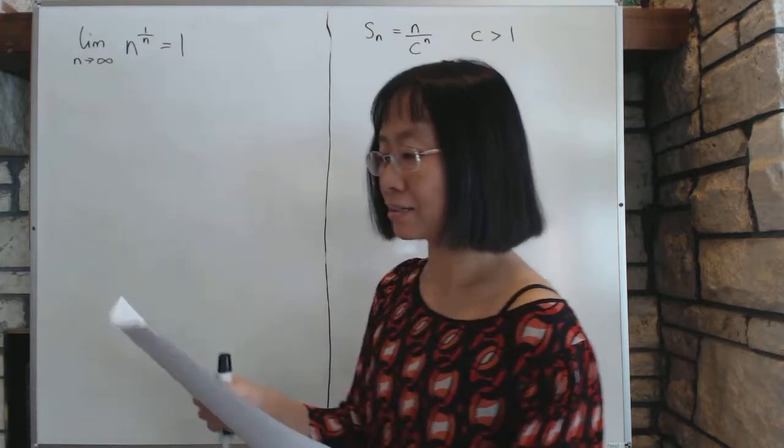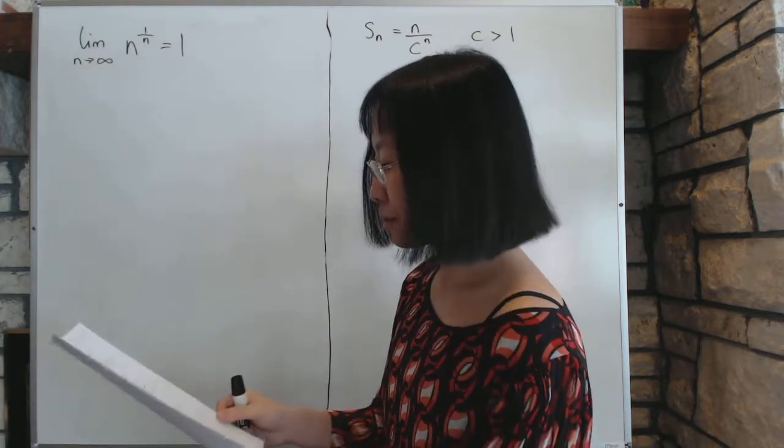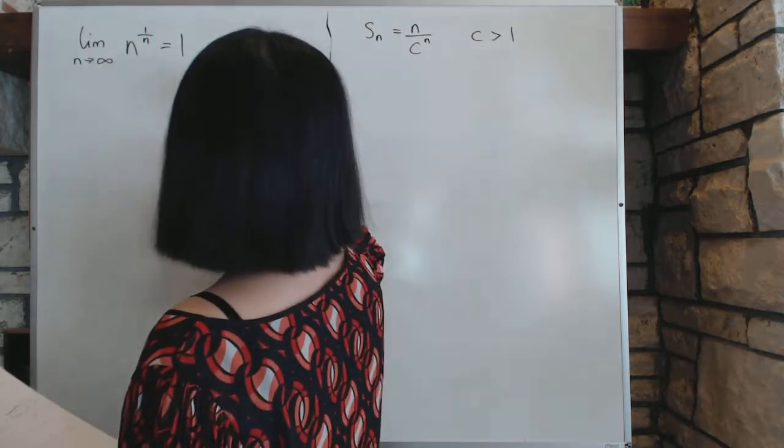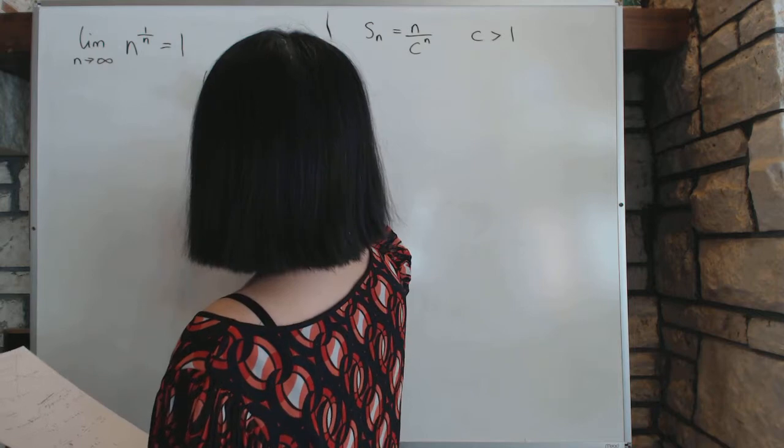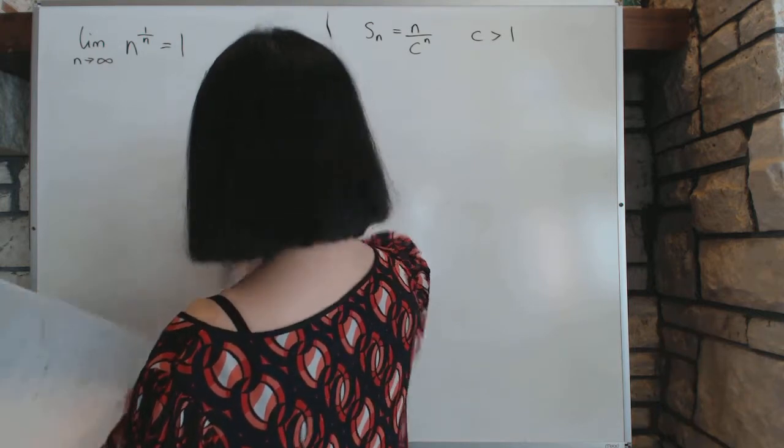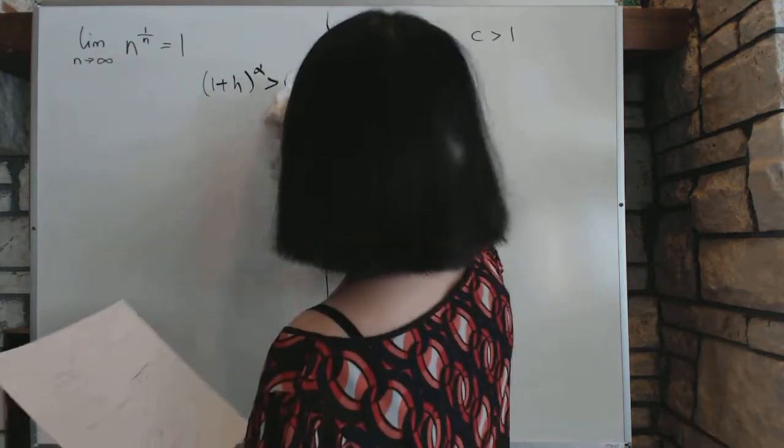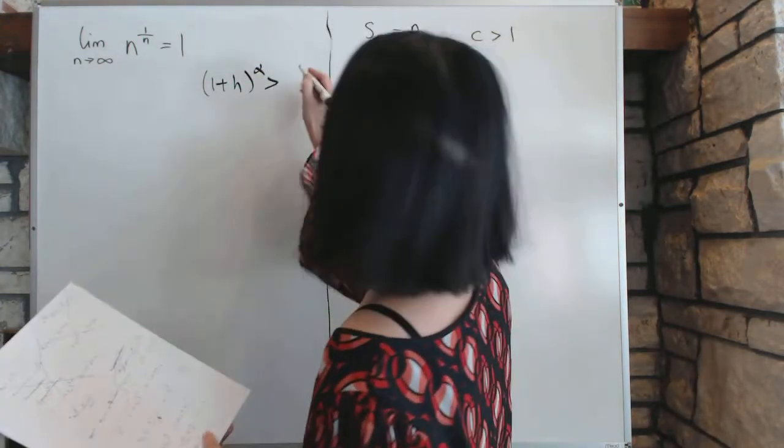We're trying to prove that it is going to 1. To do that, I'm going to pull a couple of tricks. The most important trick is this thing right here that we've been using all along, that is 1 plus h to the power of alpha is bigger than 1 plus alpha h, something that we proved a couple of sections ago.